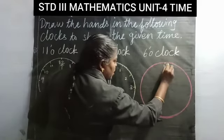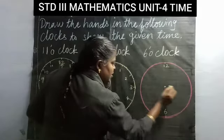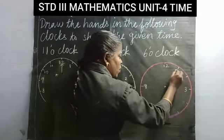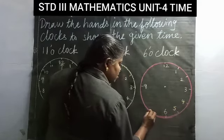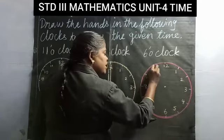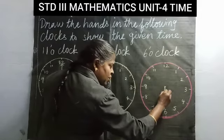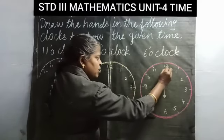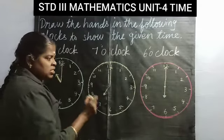Next, 6 o'clock. Draw a circle, keep a center point, write 12 opposite 6, then 3 opposite 9. In the middle write 1, 2, 4, 5, 7, 8, and leave equal distance to write 11. To draw 6 o'clock, draw the hour hand — small, not touching the number — pointing near 6, and the longer hand touching 12. So the time is now 6 o'clock.